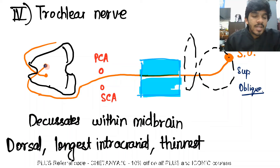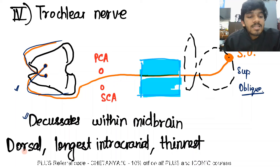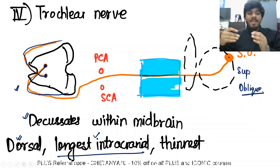The trochlear nerve is one of the only nerves that decussates within the midbrain. It comes from the left side, crosses over to the right side within the substance of the midbrain, and vice versa. It then exits from the midbrain dorsally — making it the only cranial nerve that exits the brain stem dorsally. It is also the only cranial nerve that decussates inside the brain stem, and it has the longest intracranial course because it exits dorsally and then travels anteriorly to reach the orbit.